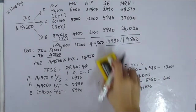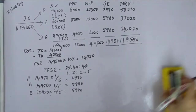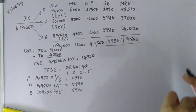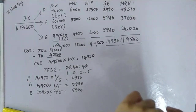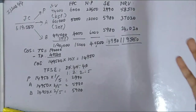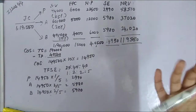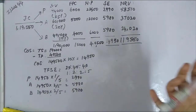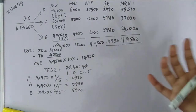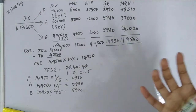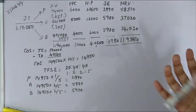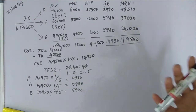Part B: If by-product A is not subjected to further processing and is sold at the point of separation for Rs 58,500 without incurring any selling expenses, would you advise its disposal at this stage?